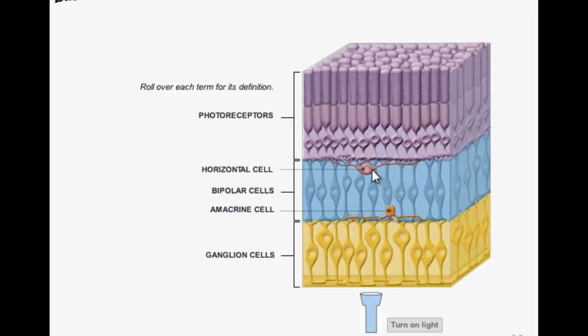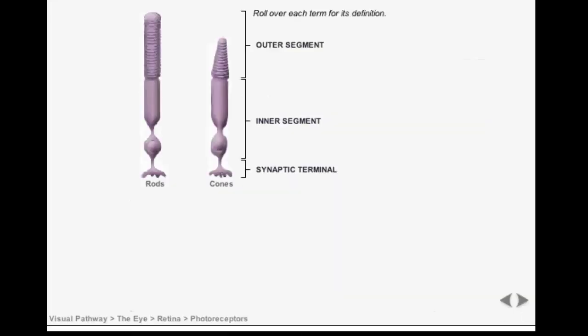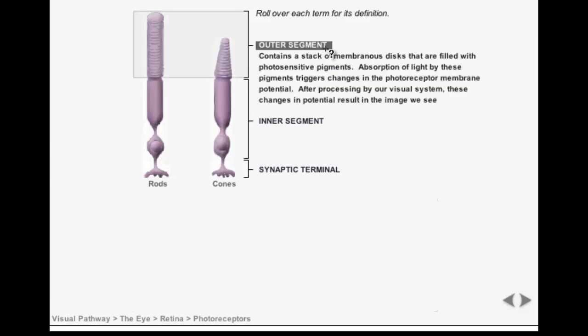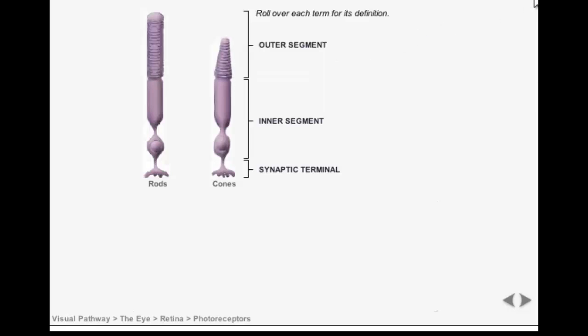Horizontal cells influence communication at the photoreceptor bipolar cell synapses. Amacrine cells influence communication at the bipolar cell ganglion cell synapses. There are two types of photoreceptors: rods and cones. The outer segment of the photoreceptors absorb light, the inner segment contains the nucleus, and the synaptic terminal connects with bipolar and horizontal cells in order to transmit information about the incoming light.